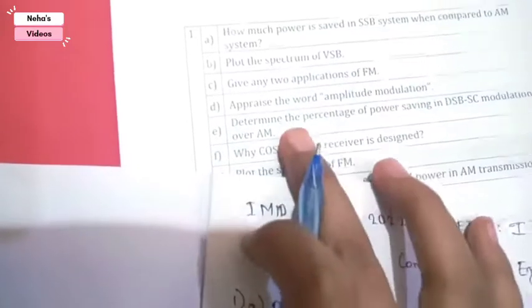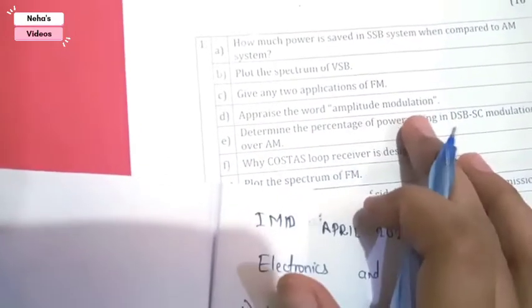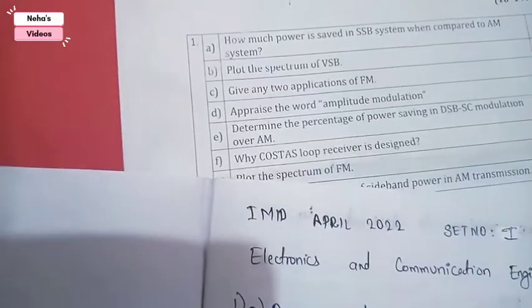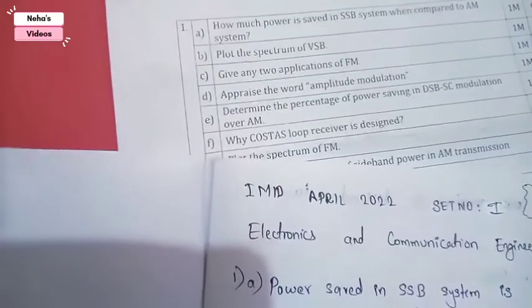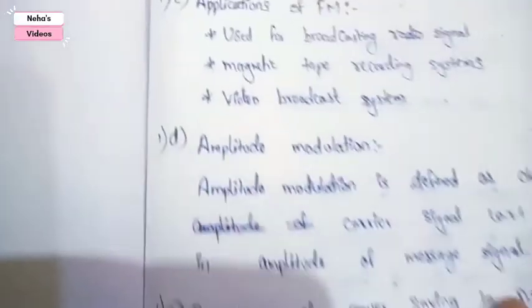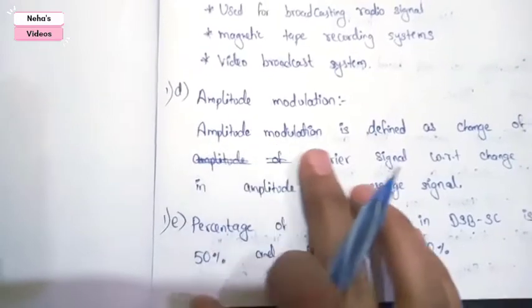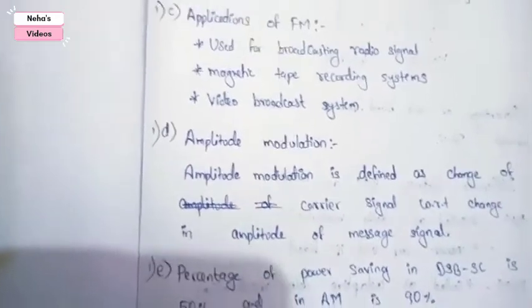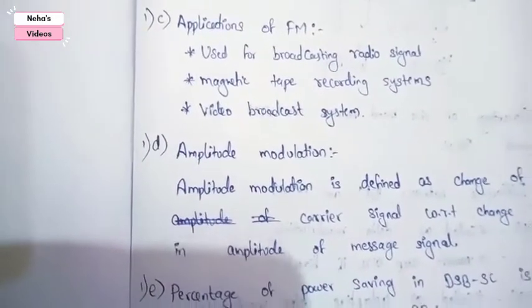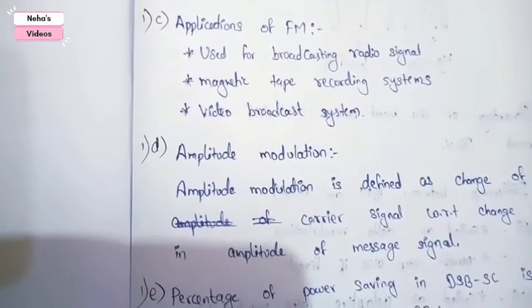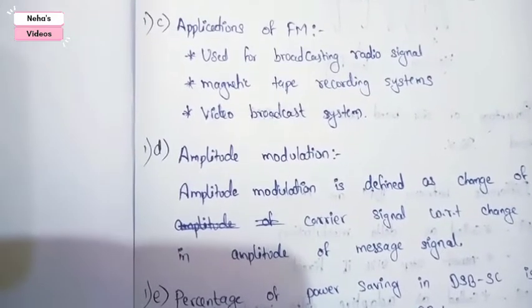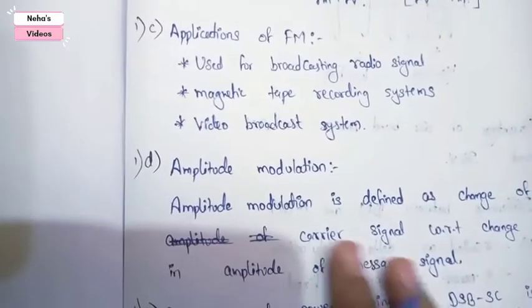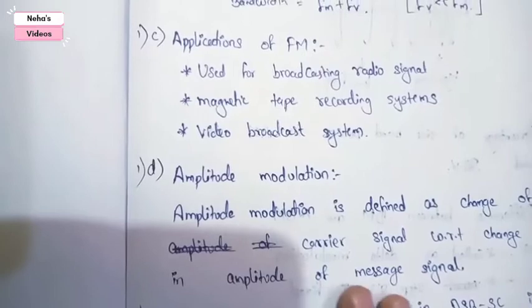The next question asks to define amplitude modulation. Amplitude modulation is defined as the change of the carrier signal with respect to change in amplitude of message signal. That means we change the frequency, amplitude, or phase of the carrier signal with respect to amplitude of the message signal.